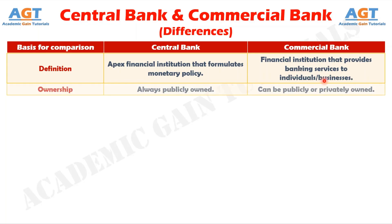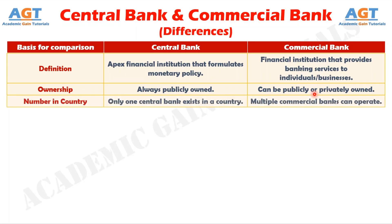Number two: the central bank is always owned by the government, whereas commercial banks may be publicly or privately owned. Number three: only one central bank exists in a country, whereas there can be numerous commercial banks operating in the same country.